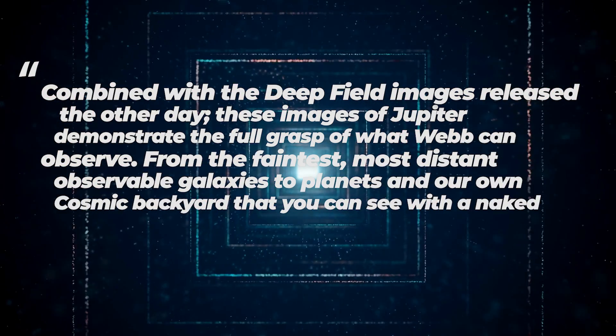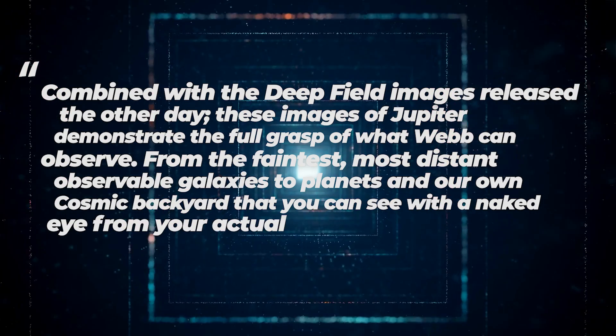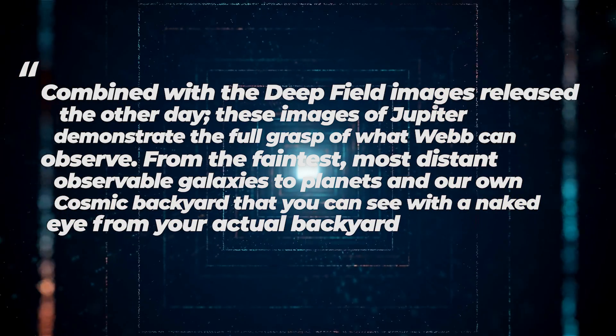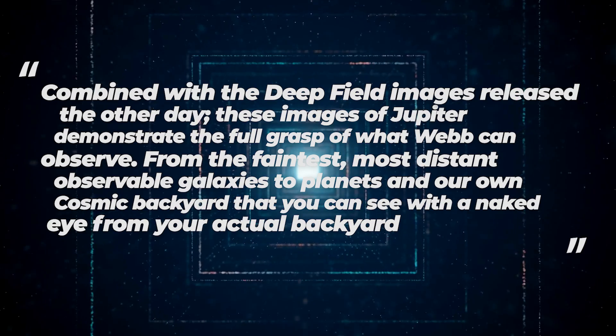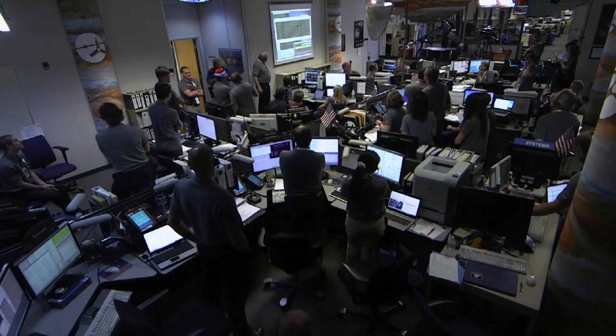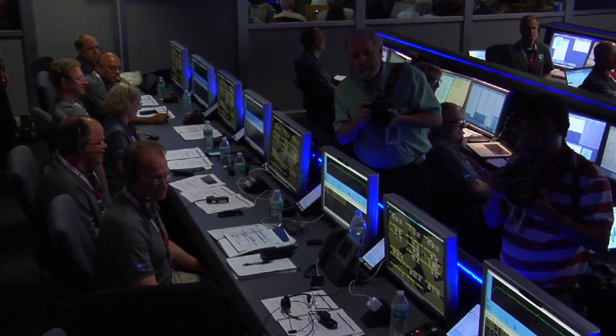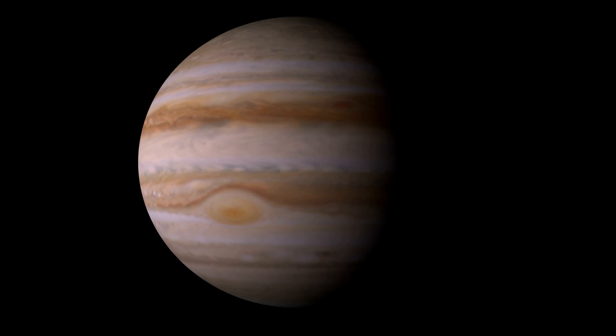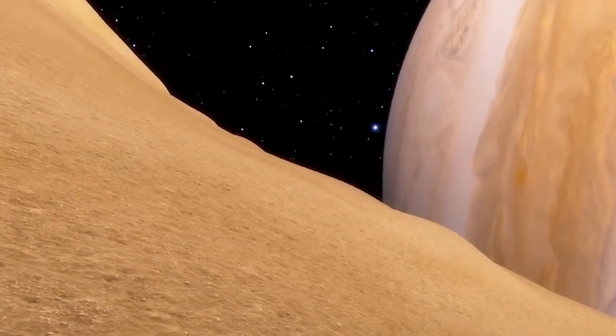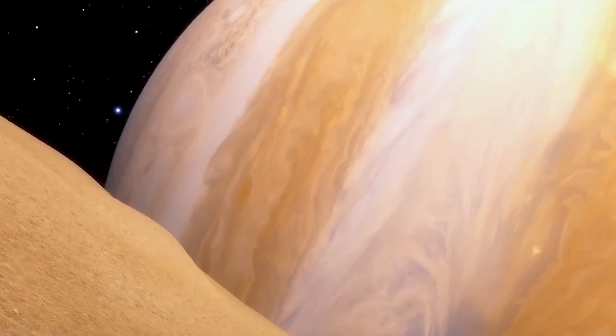From the faintest, most distant observable galaxies to planets and our own cosmic backyard that you can see with the naked eye from your actual backyard, says Brian Holler, a scientist at the Space Telescope Science Institute in Baltimore who helped arrange these investigations. Even more fascinating is the fact that a different NIRCam image gives a crystal clear sight at Jupiter's rings.